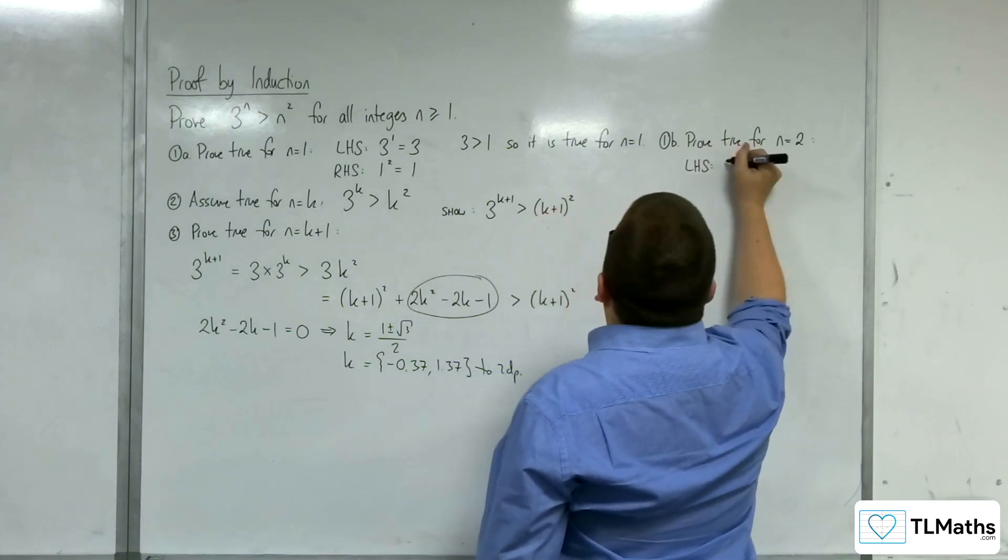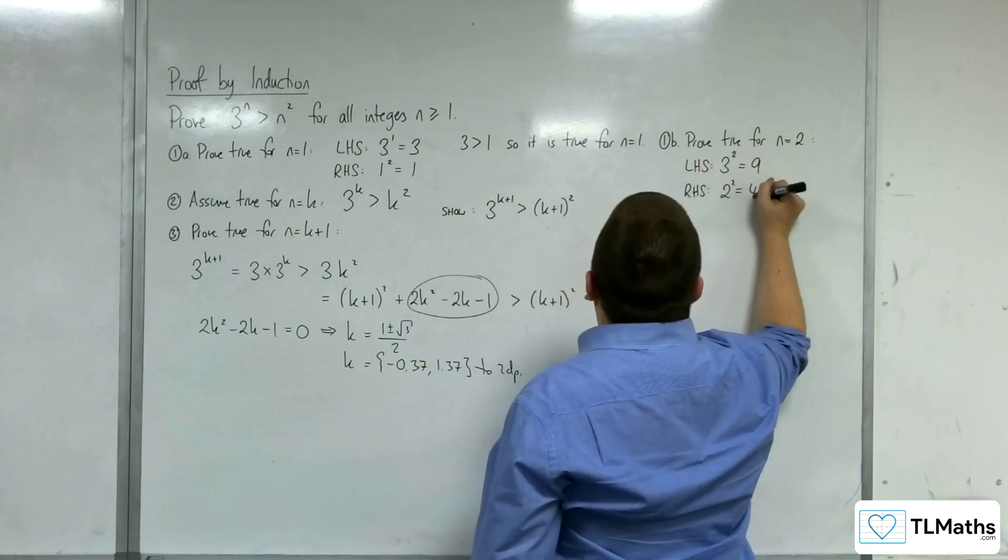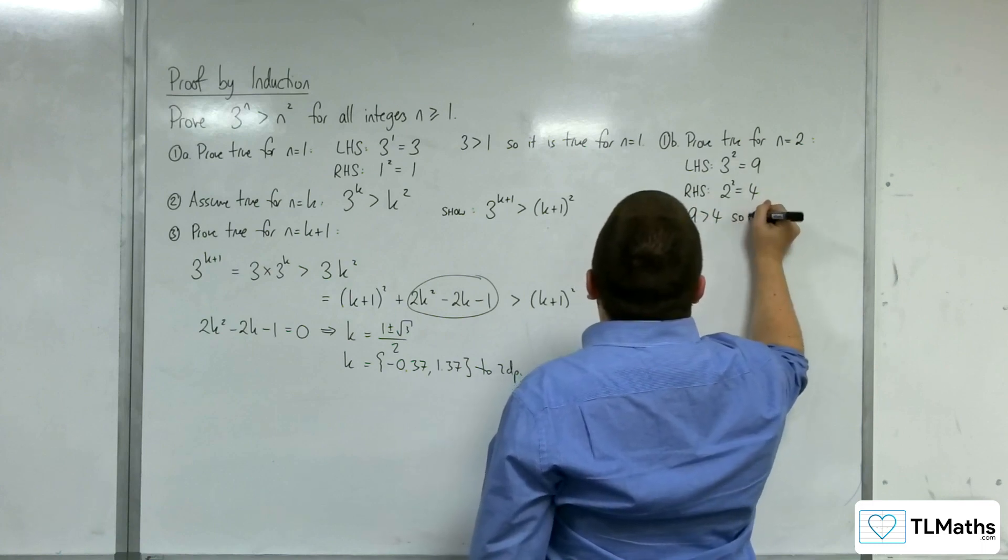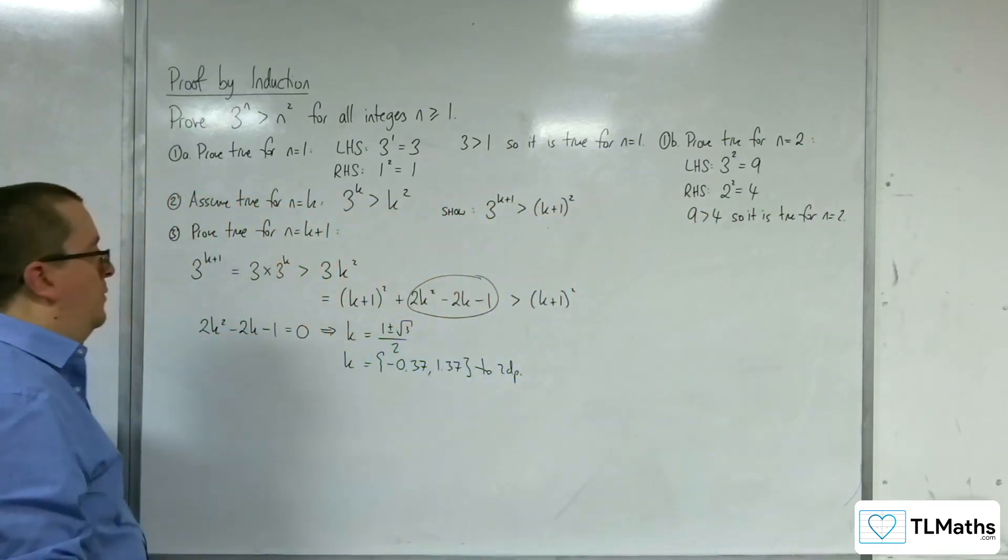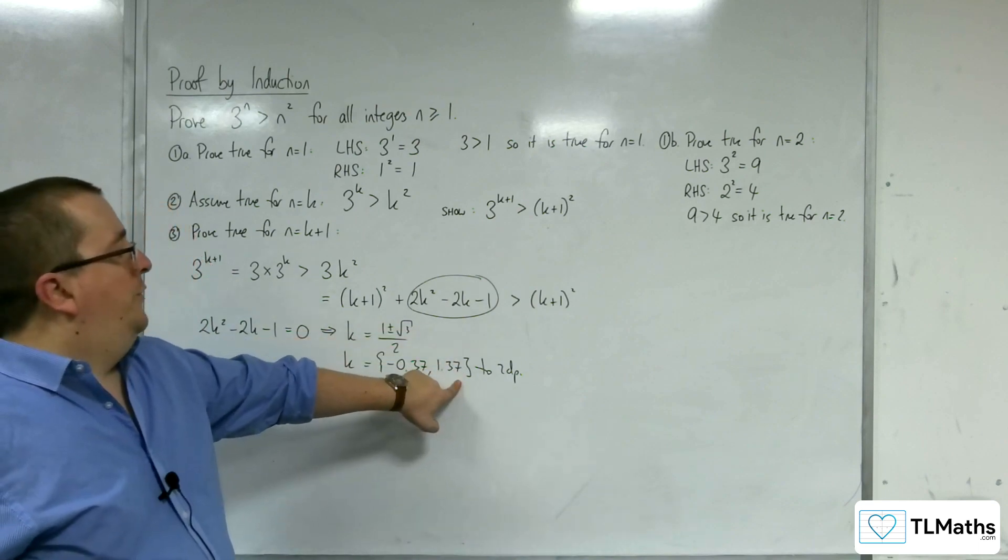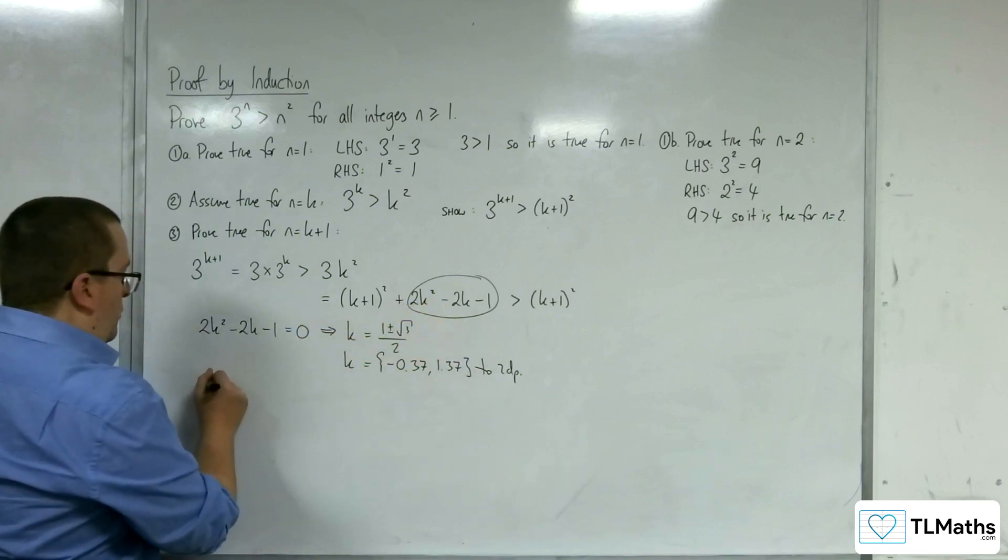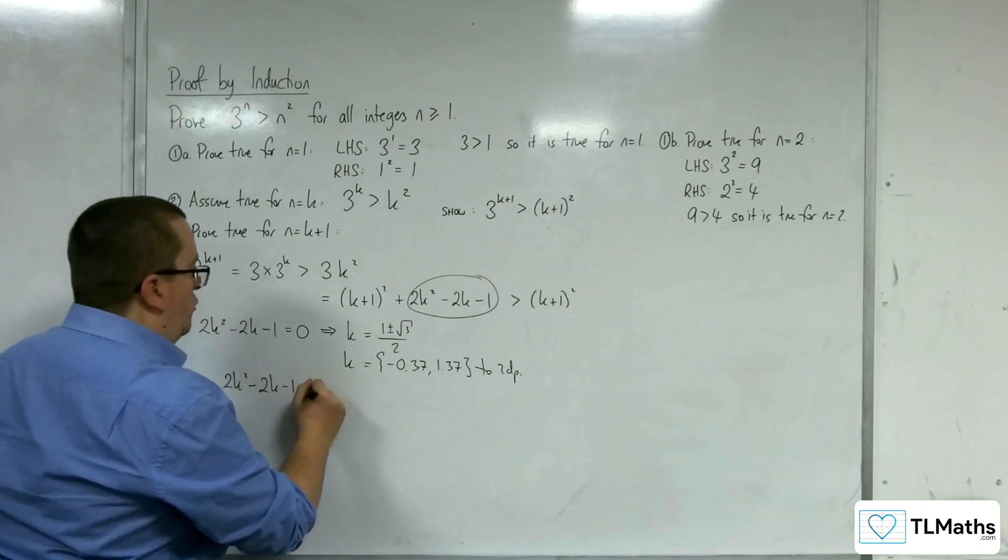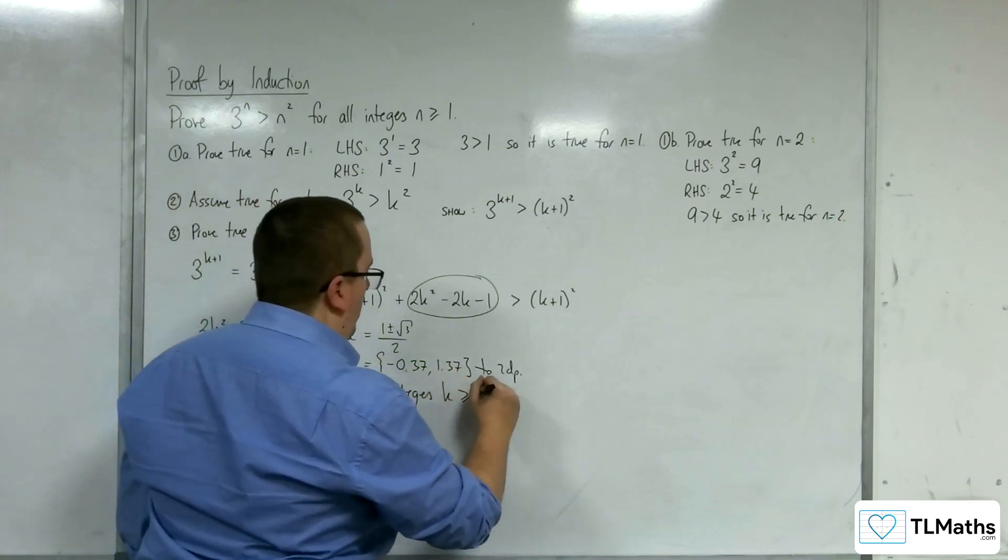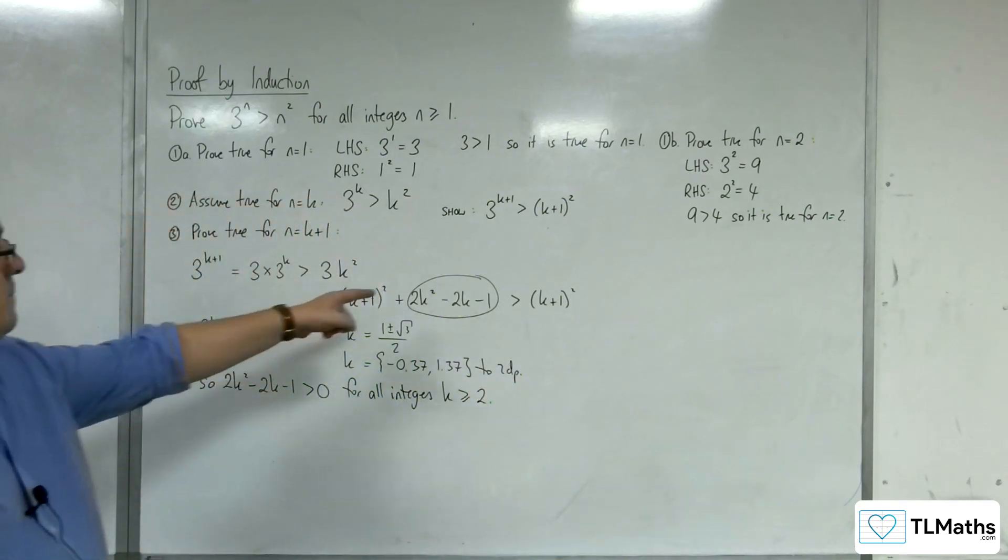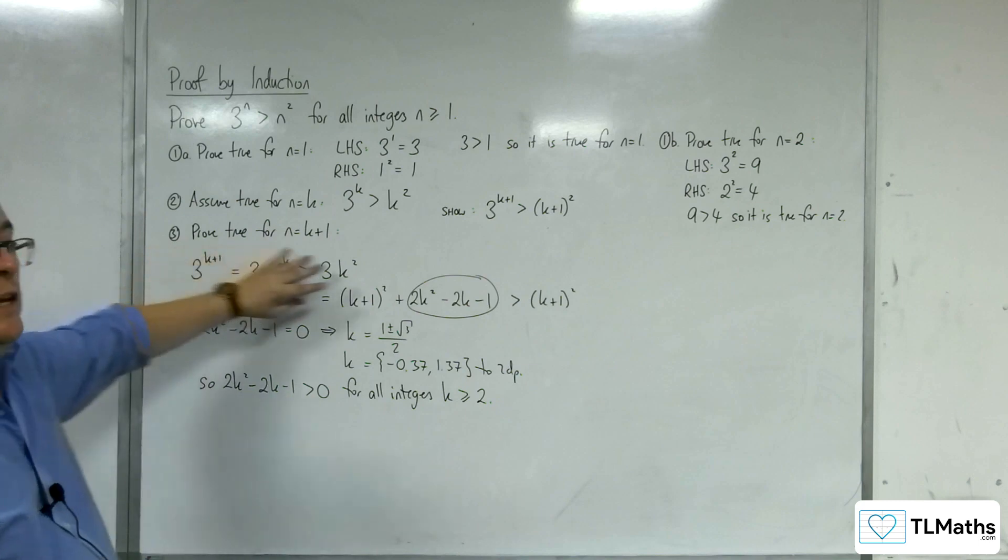When k is 2, this is positive. So 2k squared minus 2k minus 1 is greater than 0 for all integers k greater than or equal to 2. And so this is greater than 0, and so this now works for k greater than or equal to 2.